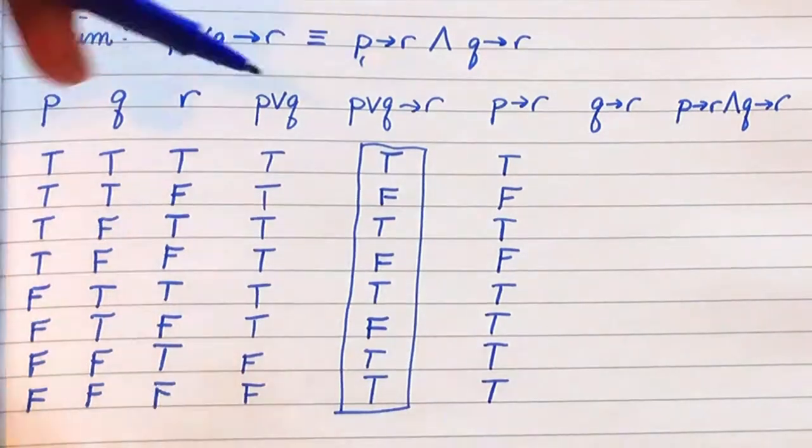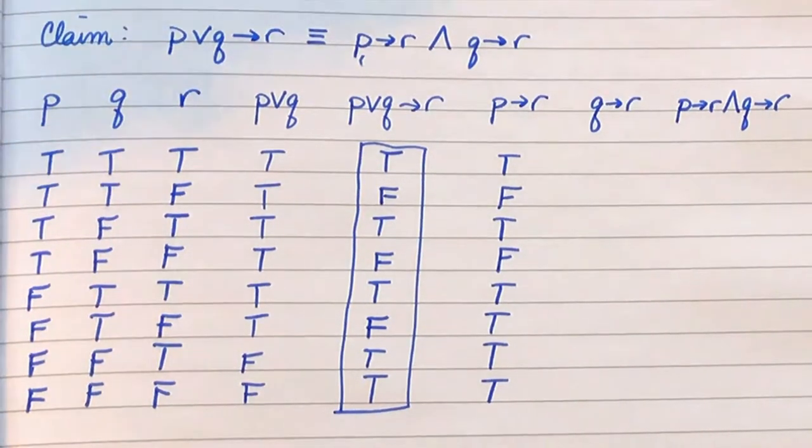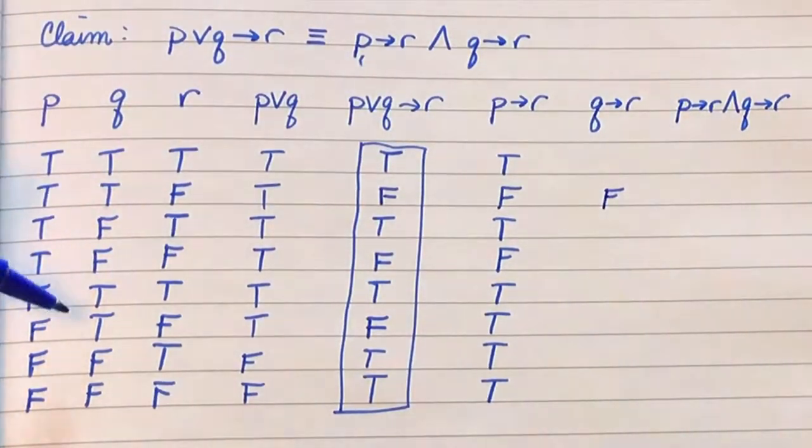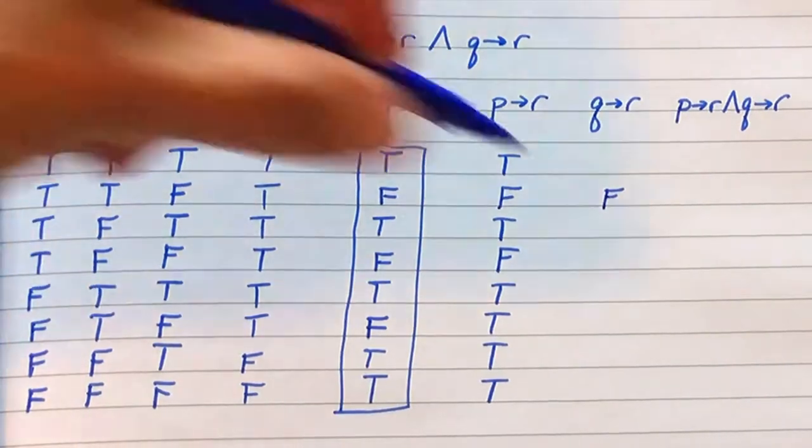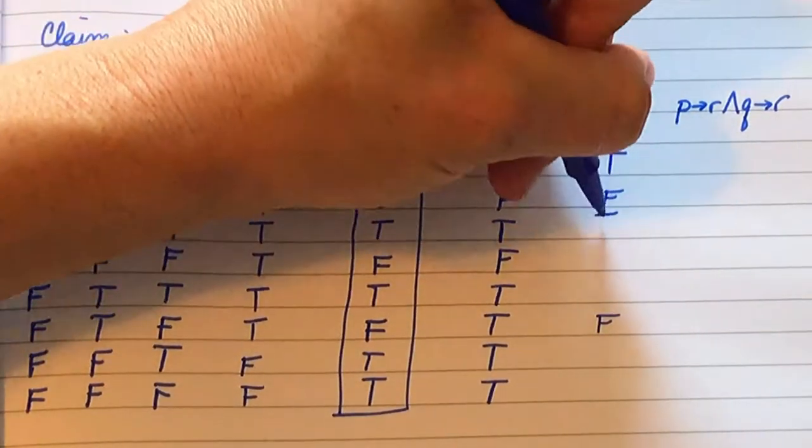For this column, there are a couple of instances in which Q is true and R is false, in which case I would get a false going in there. Q is true, R is false, get a false going there. All the others get trues.